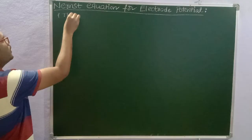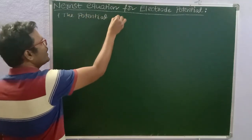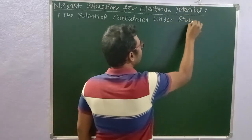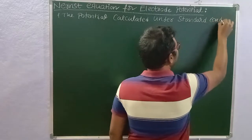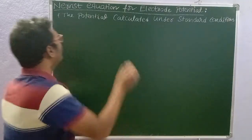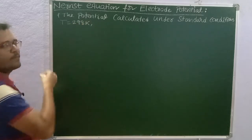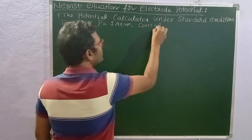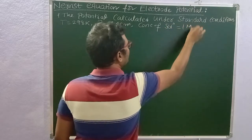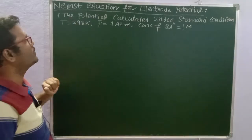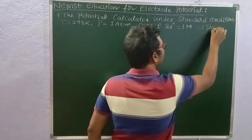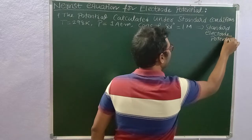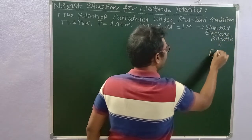The electrode potential calculated under standard conditions is denoted by E naught. Those standard conditions are: temperature equal to 298 Kelvin, pressure kept at 1 atmospheric pressure, and concentration of solution kept at 1 mole. If you calculate the electrode potential under these conditions, that potential is called the standard electrode potential, denoted by E naught.